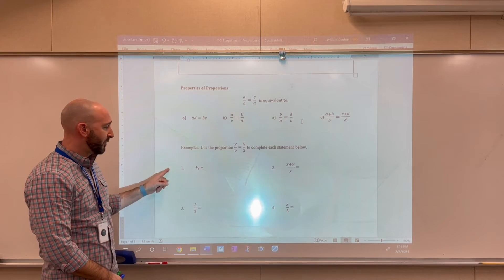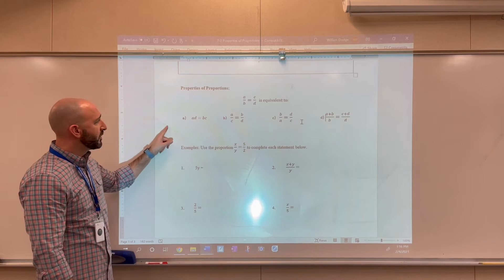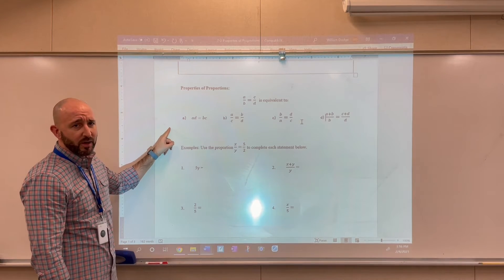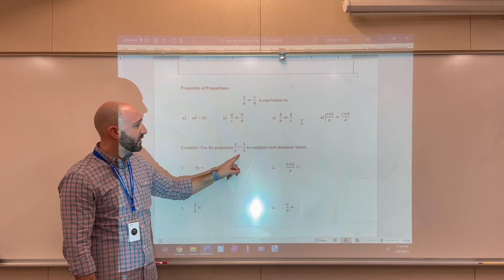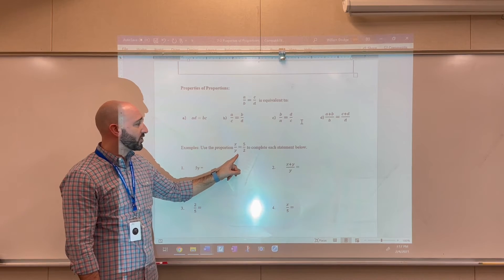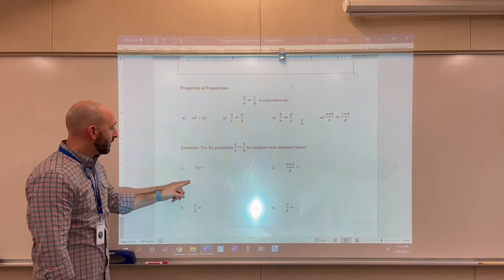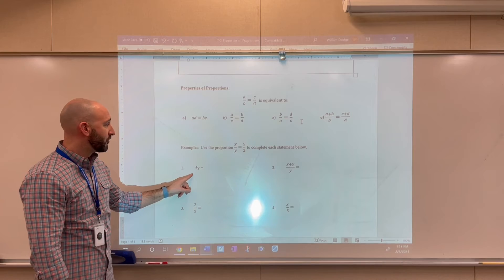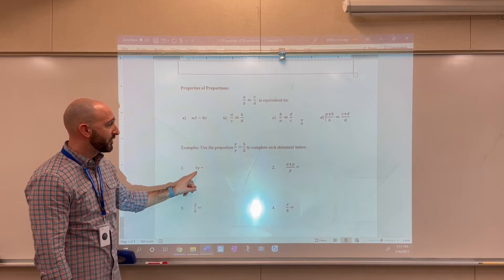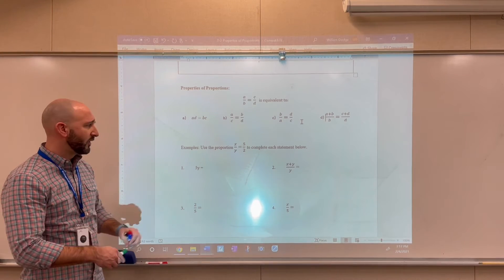So in these examples right here, numbers one through four, we're just going to be applying these properties from above. So we're going to be basically just manipulating this proportion that we're giving here. And trying to find an equivalent expression to whatever we get. So for instance, let's take a look at the first one. So here, we have 5y.